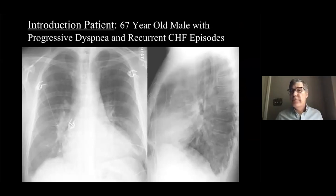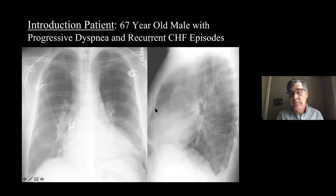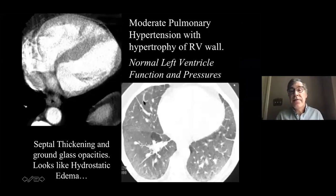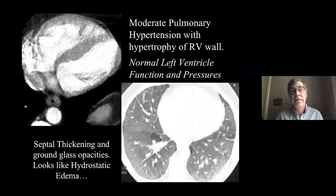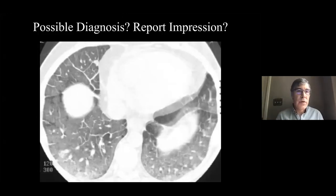Let's start with an introductory patient: a 67-year-old with regressive dyspnea and recurrent congestive heart failure episodes. On PA and lateral radiograph, the heart size may be a little big and the right ventricle looks enlarged. On CT, there is evidence of septal thickening, hydrostatic edema with ground glass, and small effusions. There is thickening of the right ventricular free wall—shouldn't be more than four millimeters—and straightening of the intraventricular septum. This patient shows evidence of pulmonary hypertension. What's the possible diagnosis? We'll come back to that.